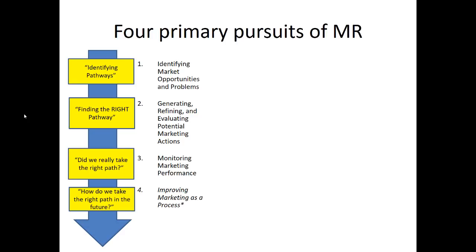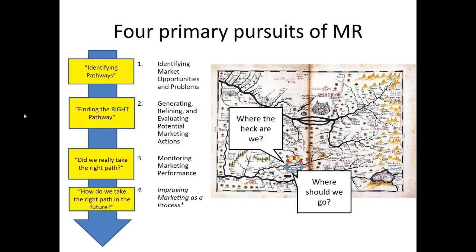I like to think of this as going from being completely lost — identifying opportunities and problems — to actually laying out a map so that we have an understanding of the landscape. That might help us figure out where we should go. For example, while identifying marketing opportunities and problems, we will identify some things that might be harmful and some things that might be valuable to us.